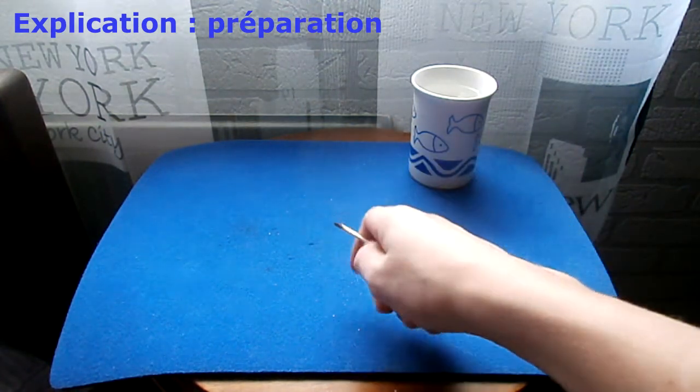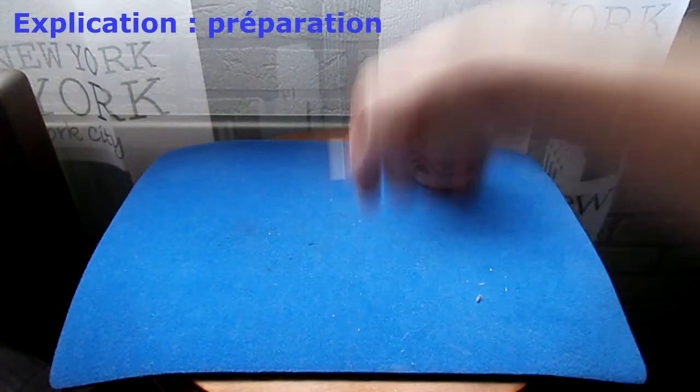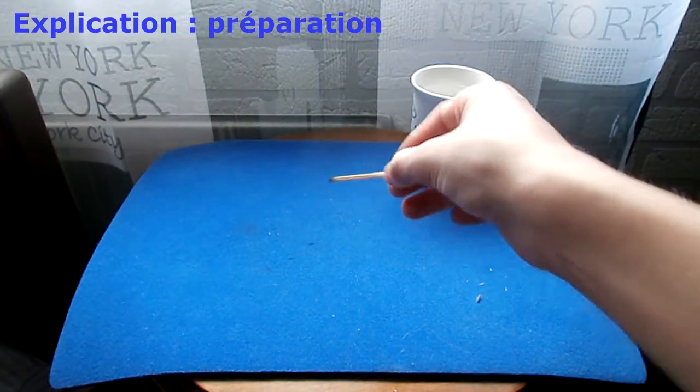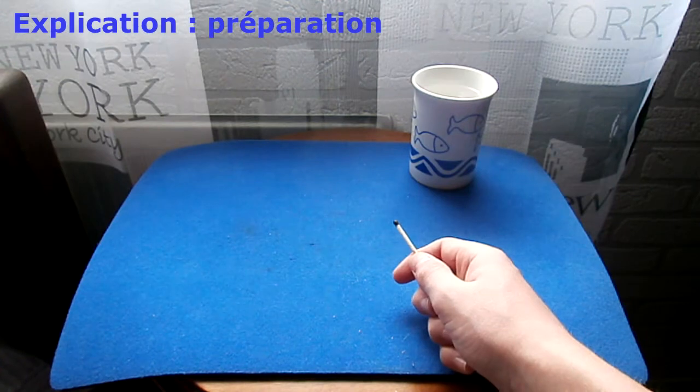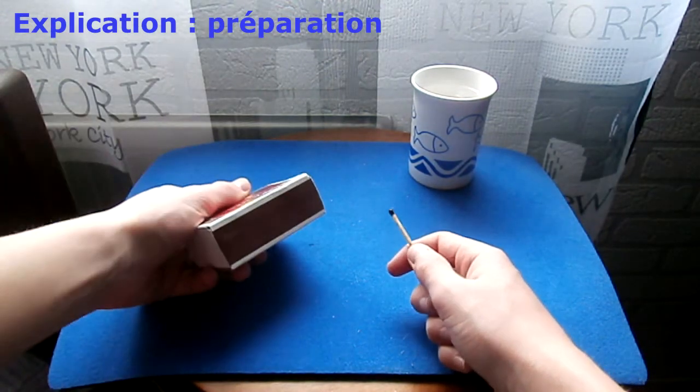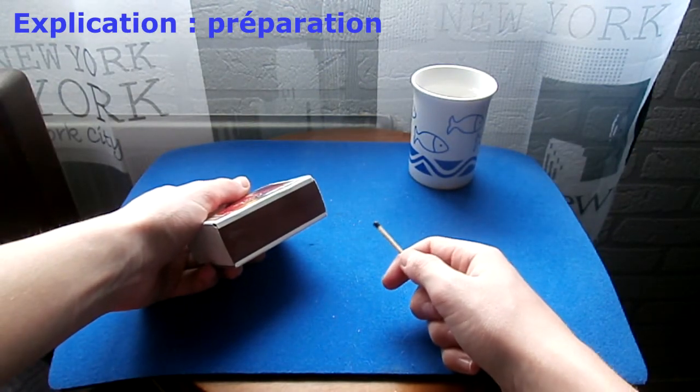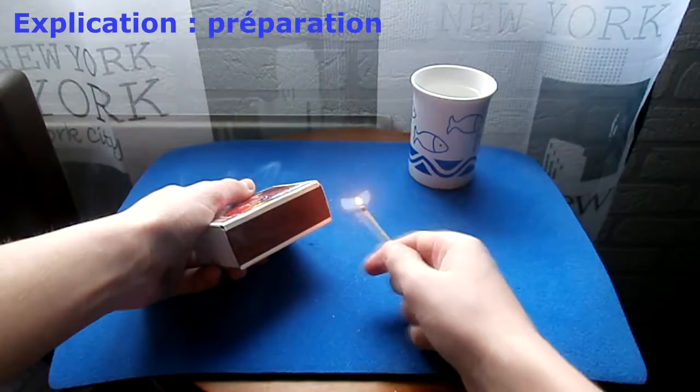Donc après, vous êtes comme ça, vous l'avez allumé votre allumette, dans un mouvement, vous pivotez. Et après, vous attrapez encore votre boîte, et là, vous dites, regardez, je peux quand même réussir à l'allumer deux fois. Et là, vous l'allumez.